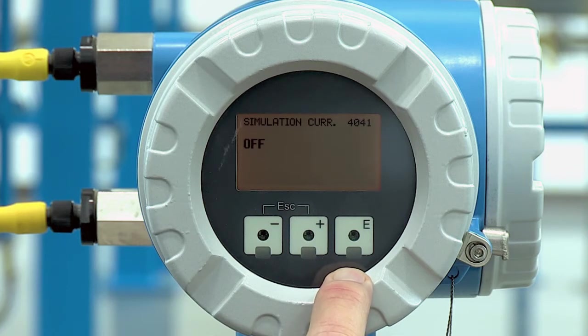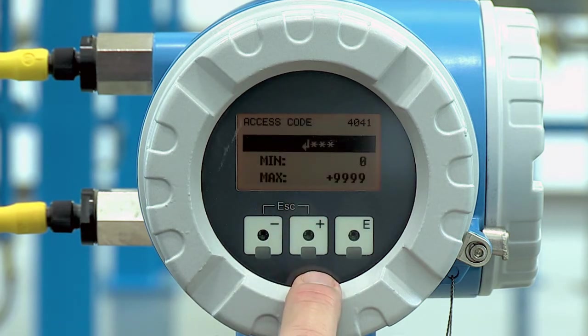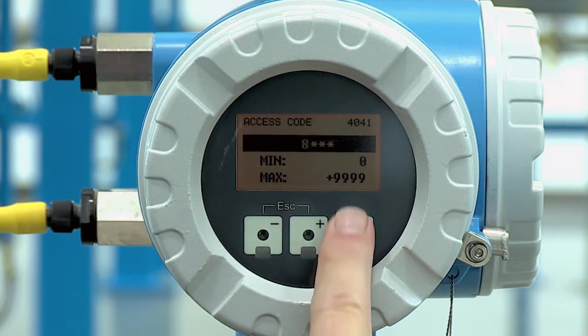Make sure your control signal is getting the right milliamp signal back and you're reading it correctly. Here let's hit the plus button once again to change programming. We need to enter the access code, in this case the model number.